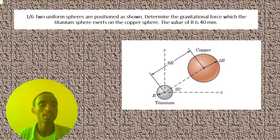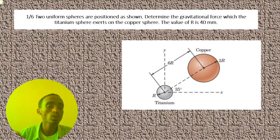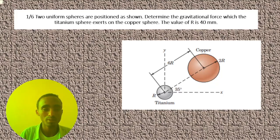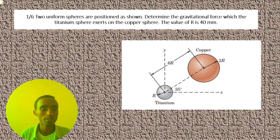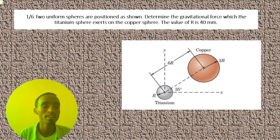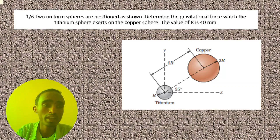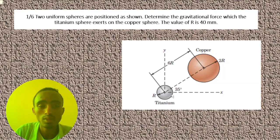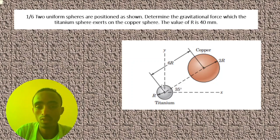Hi everyone, welcome back to my YouTube channel. My name is Noi. Today I'm going to show you how you can solve this problem. This problem is all about gravitational force. Two uniform spheres — a copper sphere and a titanium sphere — are positioned as shown here.